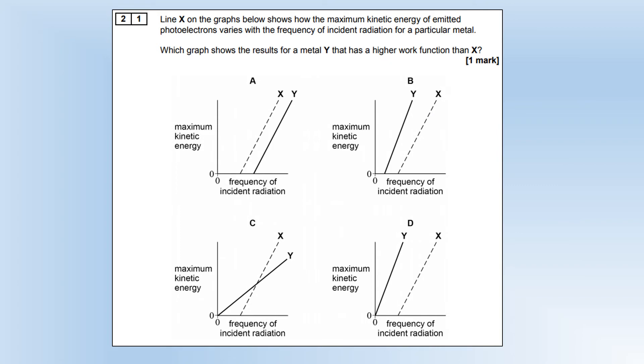Line X on the graph shows how the maximum kinetic energy of an emitted photoelectron varies with frequency with a particular metal. Which graph shows the results with a higher work function than X? The threshold frequency is higher. So the frequency at which they first emitted will be higher. So that's clearly option A. But other than that, it's the same gradient graph.